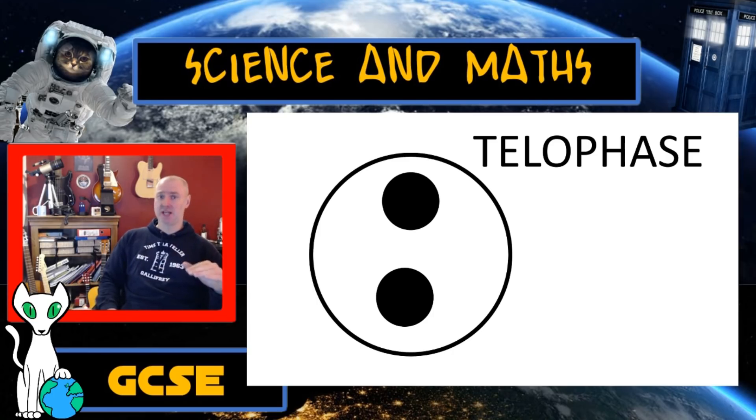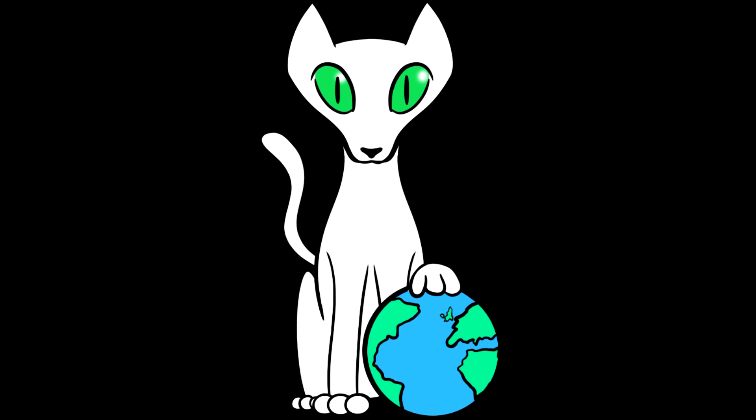But for now, we've still only got one cell and we want two. And that's because mitosis only produces two cells. So don't get confused with meiosis, which is another video. Meiosis produces four, but mitosis only makes two cells.